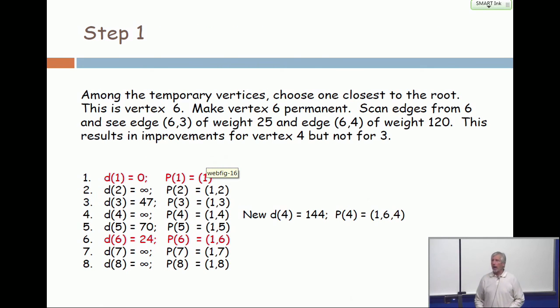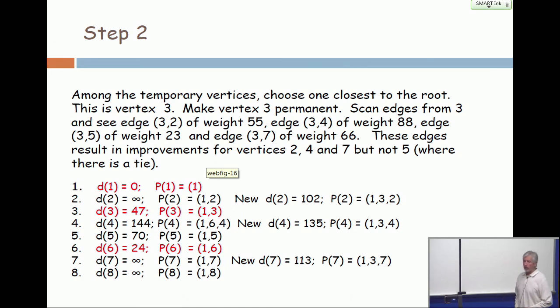And so I update that, and in the next slide you will see the distance to four being 144. Okay. Now, out of the remaining ones now, see the 144 at line four? But you look at all the temporary distances and take the cheapest one. The cheapest one is now 47. You declare it permanent, and you scan from that vertex to see other candidate paths. And based on those scans, you update three of them.